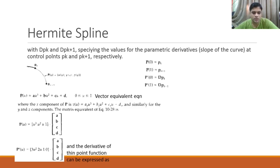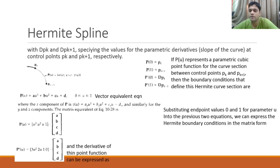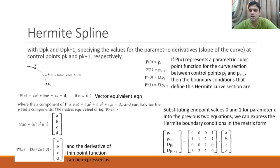We have four boundary conditions: p(0) = p_k, p(1) = p_{k+1}, p'(0) = dp_k, and p'(1) = dp_{k+1}, where dp_k means the derivative of p_k. Substituting u = 0 and u = 1 into the point function and slope equations, we can express the Hermite boundary conditions in matrix form. The coordinate matrix is [0,0,0,1; 1,1,1,1; 0,0,1,0; 3,2,1,0] multiplied by the coefficient vector [a, b, c, d].